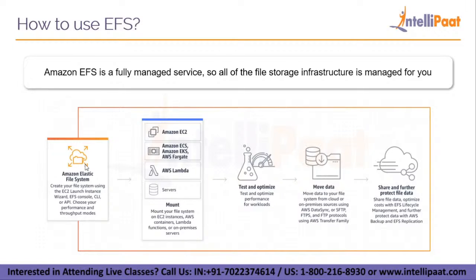The next stage is mounting your file system on EC2 or AWS containers, which can be deployed using AWS ECS, EKS, and Fargate. You can also mount your file system on Lambda functions, and you can mount your EFS on on-premises servers — that is, bare metal servers located inside a company. The third stage is to test and optimize your infrastructure: put in test data and see how it works. If you need more throughput or more IOPS performance, you can adjust those using the throughput and performance modes.